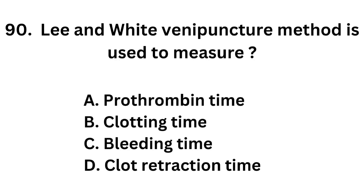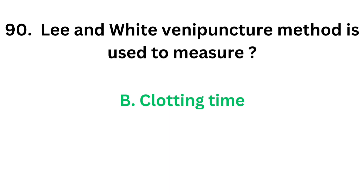Question number 90. Lee and White venipuncture method is used to measure: Option A: Prothrombin time. Option B: Clotting time. Option C: Bleeding time. Option D: Clot retraction time. The correct answer is option B, clotting time. Lee and White venipuncture method is used to measure clotting time.